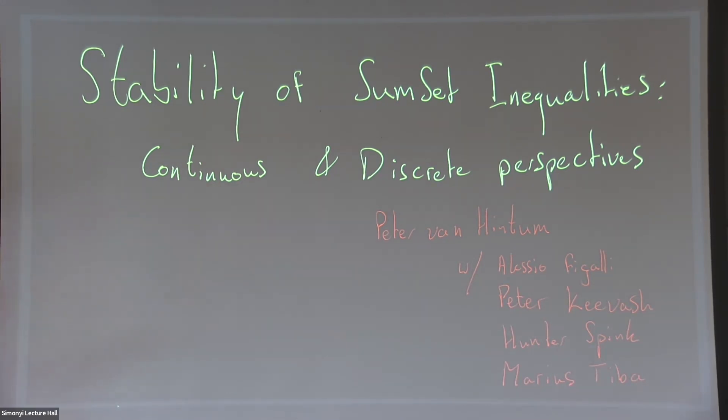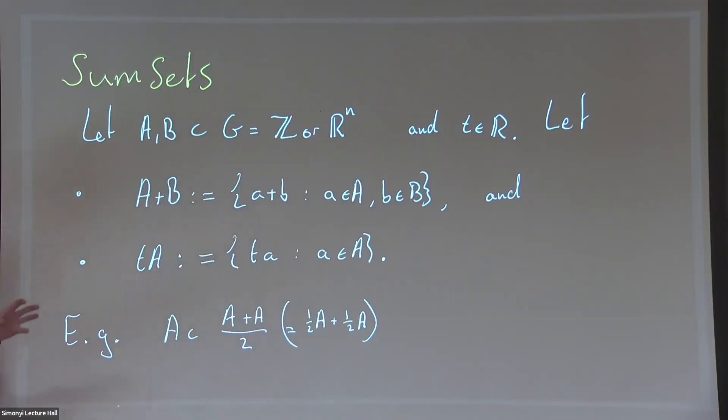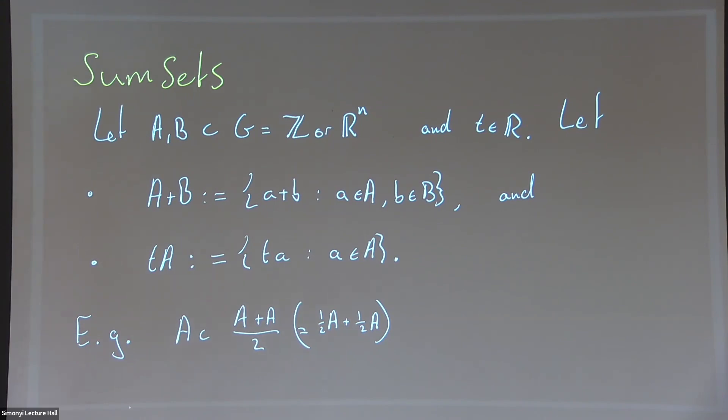There are three notions I'd like to remind you of before diving into the content. First is the notion of a sum set: if you have two subsets of a group, you take all pairwise sums of elements from the first set and the second set. Then the scalar growth: if I take parameter t in R, I'm scaling up all elements with that parameter. One example is that A will always be in A+A over 2, simply because every element is the average of itself with itself.